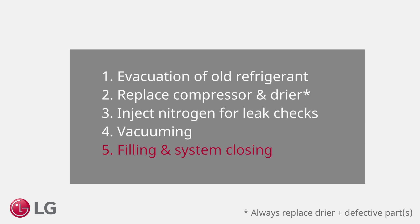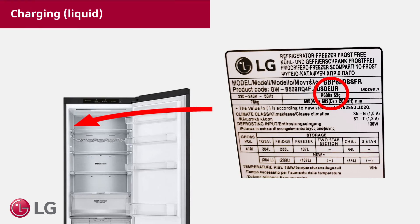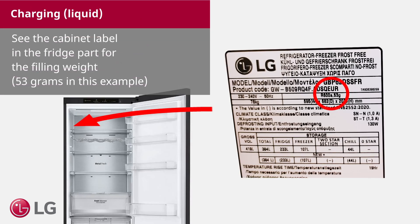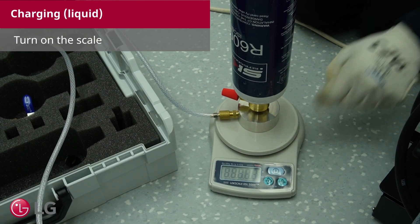Filling and system closing. See the cabinet label in the fridge part for the filling weight, 53 grams in this example. Turn on the scale.